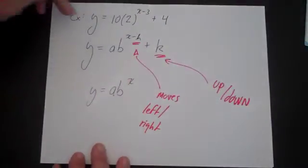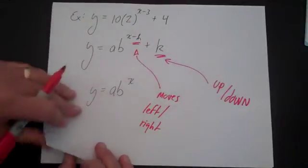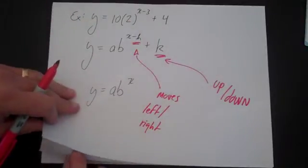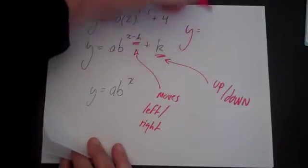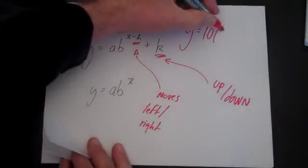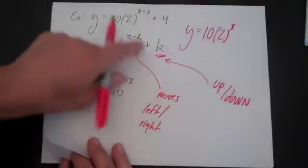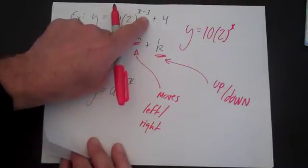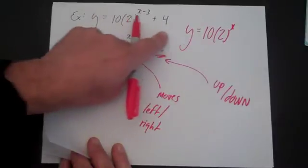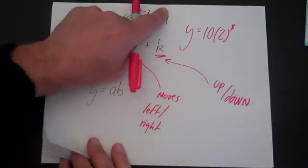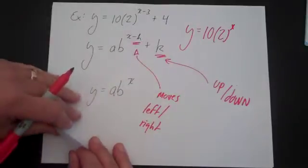So if we look at this problem, y equals 10 times 2 to the x minus 3 plus 4, what we notice is this is the same as y equals 10 times 2 to the x, except for it shifted 3 in the positive direction to the right, and it shifted up in the positive direction 4. So let's go ahead and start graphing that.